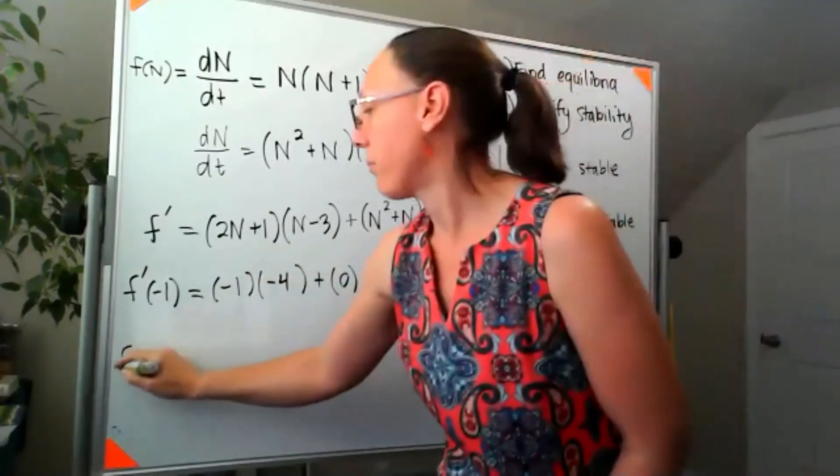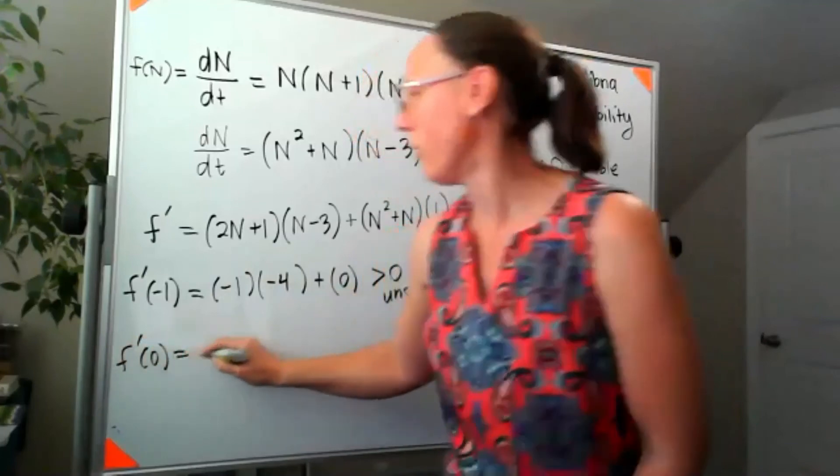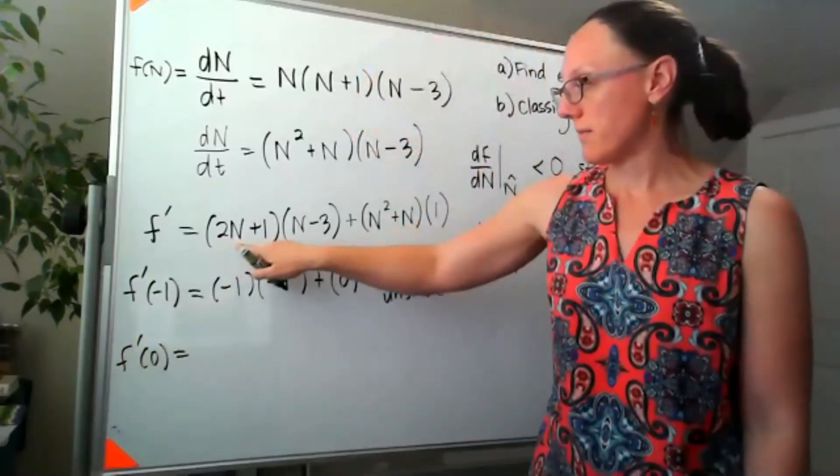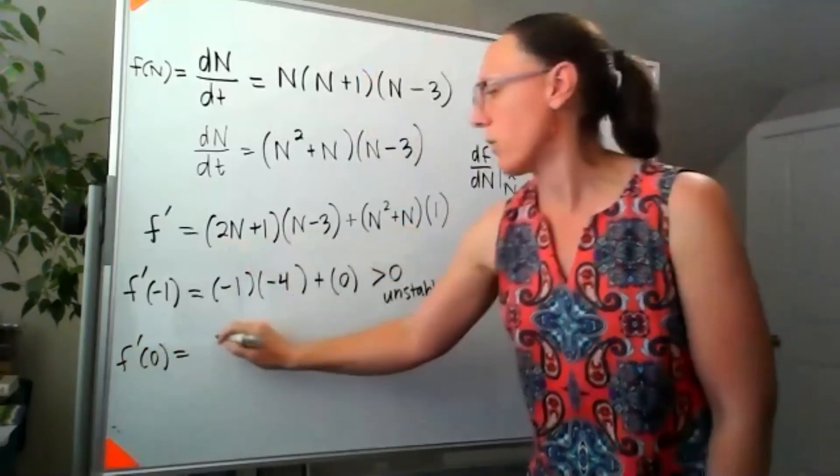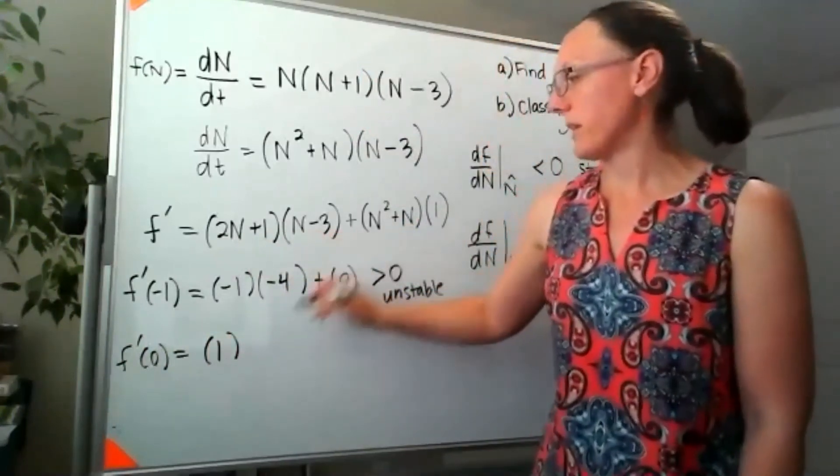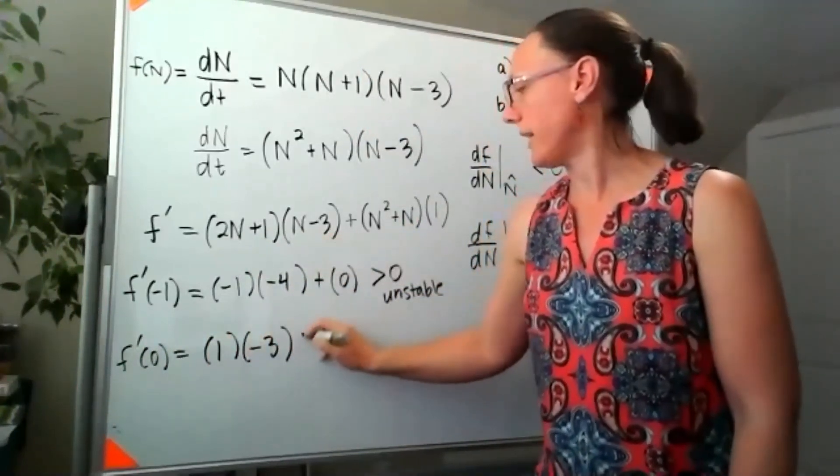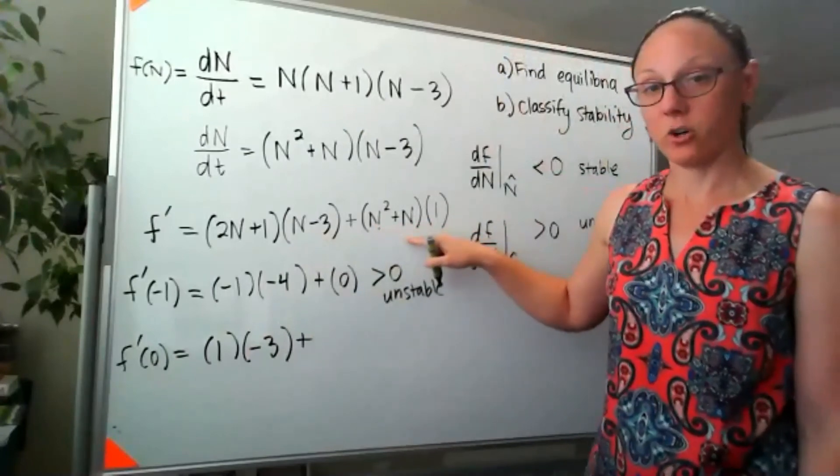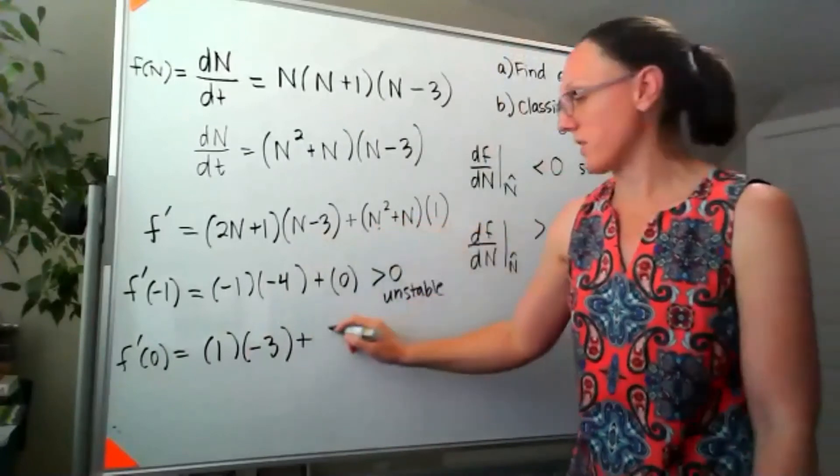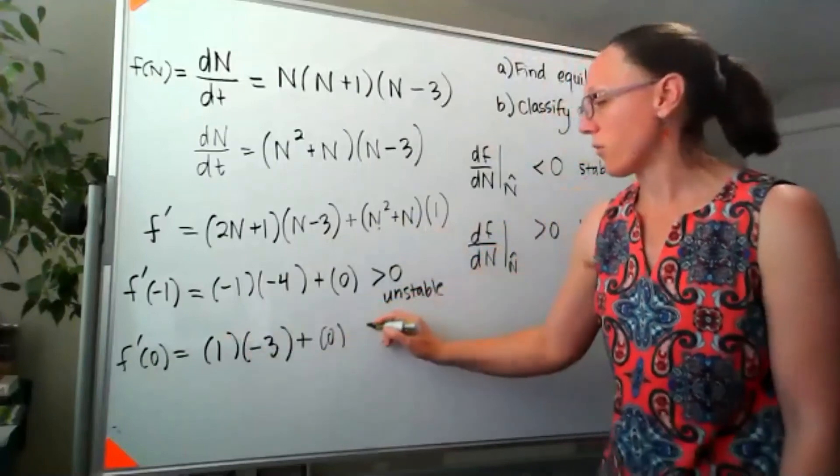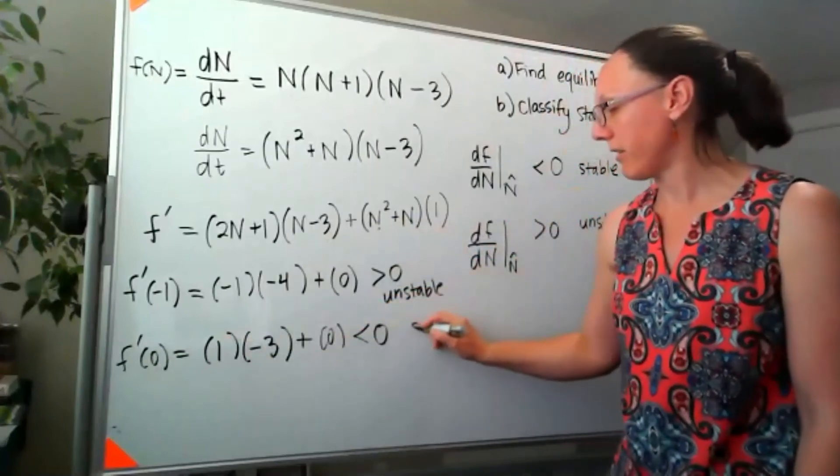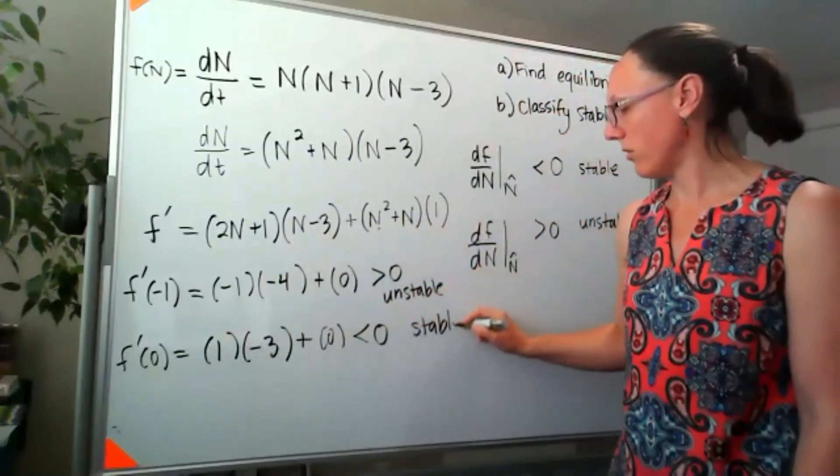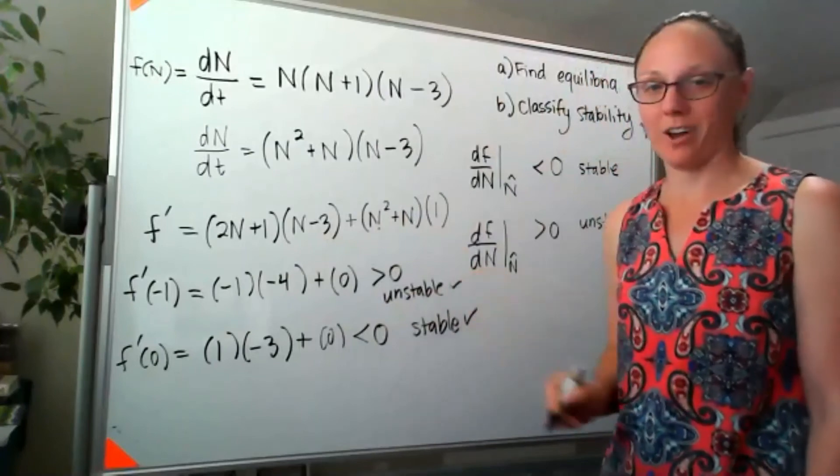Now let's check f prime of 0. 2 times 0, that's 0, plus 1. 0 minus 3, that's negative 3. And over here when I plug in 0, that's going to go 0. So 0 squared plus 0 is more 0, which means overall this is negative and stable, which also matches what we got before.